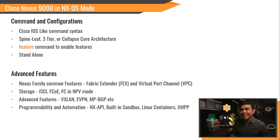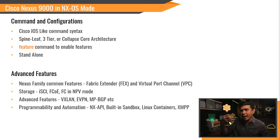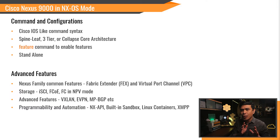Using Nexus 9000 in NXOS mode, you can use any network design: Spine-Leaf architecture, 3-tier hierarchical model, and collapsed core. Here is one command that separates NXOS from IOS and Catalyst switches.